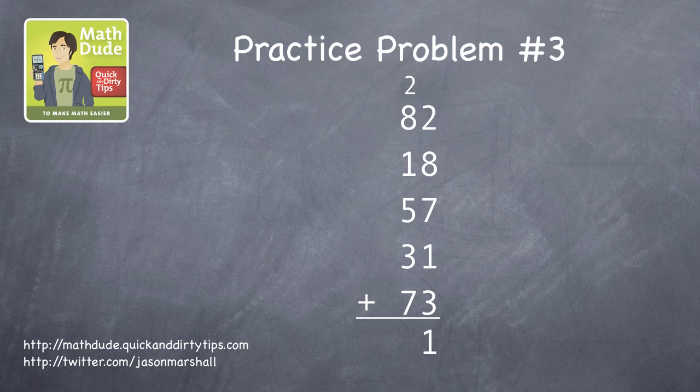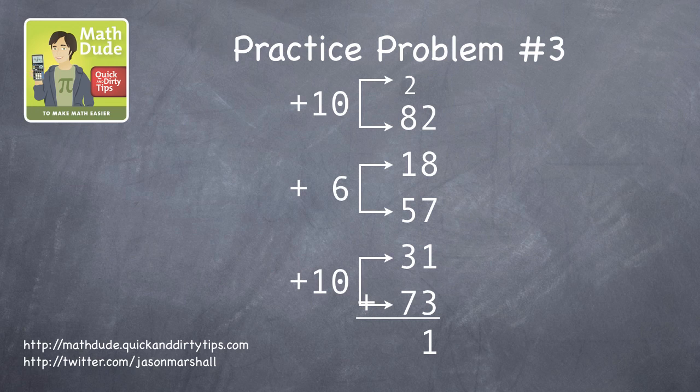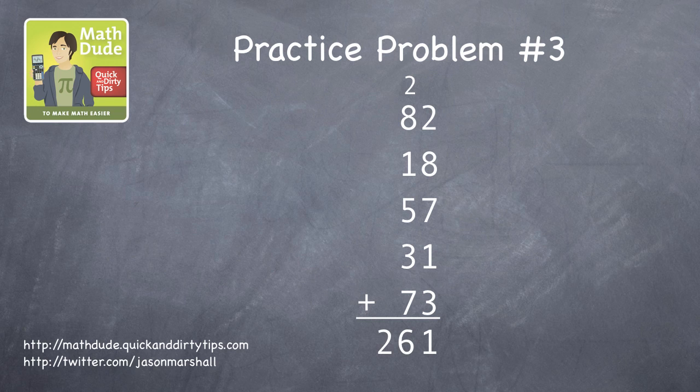Put the 1 in the ones column, carry the 2, then look for pairs in the tens column. 8 and 2 is 10, 7 and 3 is 10, that's 20. 5 and 1 is 6, so it's a total of 26. 6 and the sum is 261.